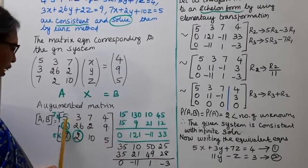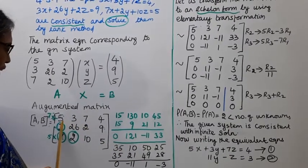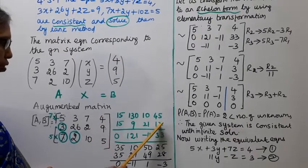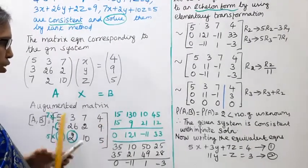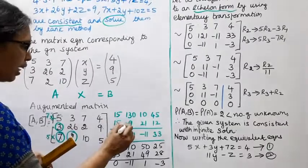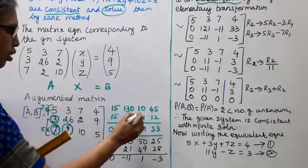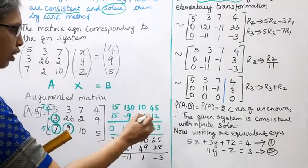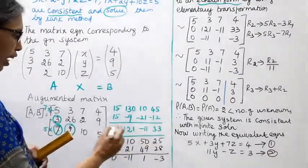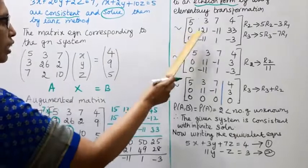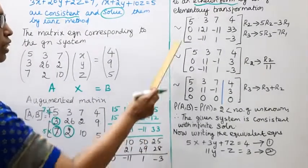Applying R2 → 3R2 − R1: 3 sevens are 21, 3 fours are 12. We get 0, 121, −11, 33. So R2 becomes [0, 121, −11, 33].